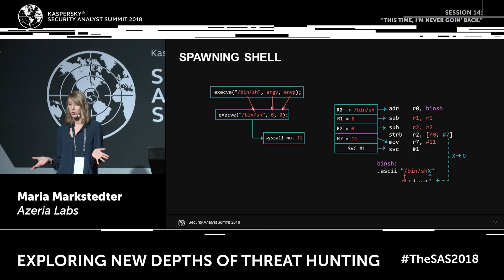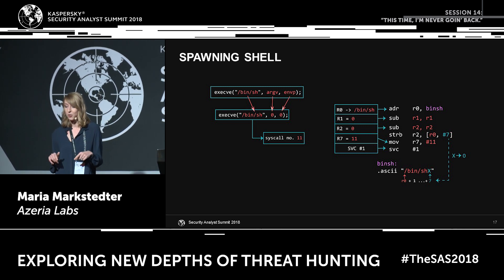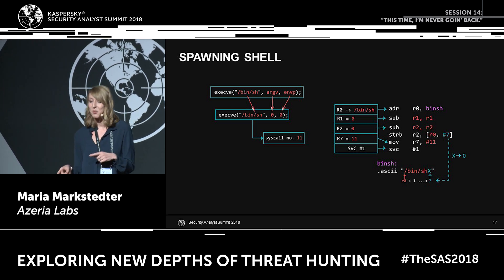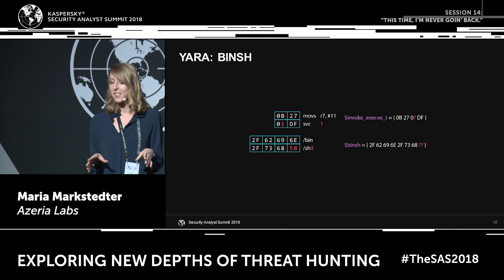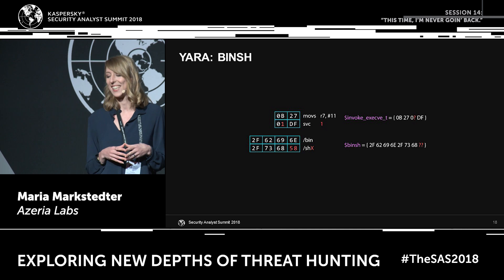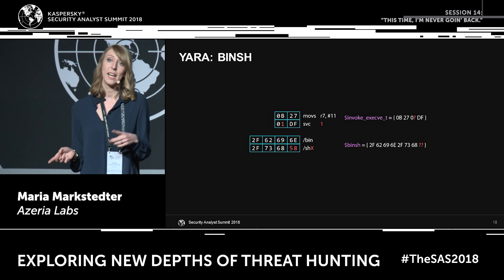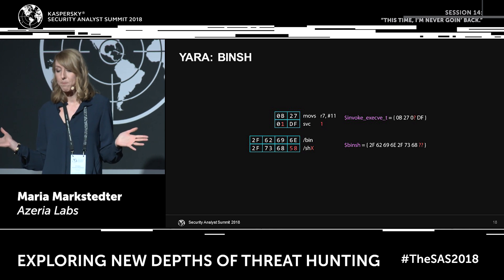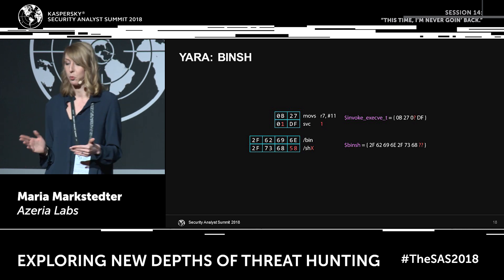Last but not least, we need to spawn a shell. We reference the address of our /bin/sh string into R0. R1 and R2 are zero, then we replace the placeholder with a zero byte during runtime using a store byte instruction. The syscall number is 11, and this is a Yara rule to detect the execv invocation and the /bin/sh string. Again, SVC can also be SVC 0 if you don't care about zero bytes, and the /bin/sh placeholder can be any placeholder — that's why it's also variable, represented with question marks.